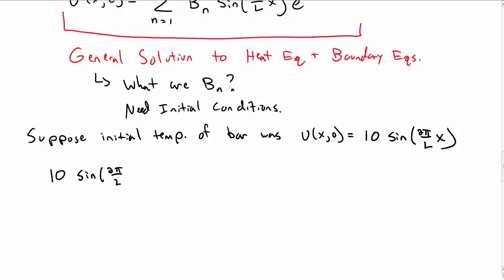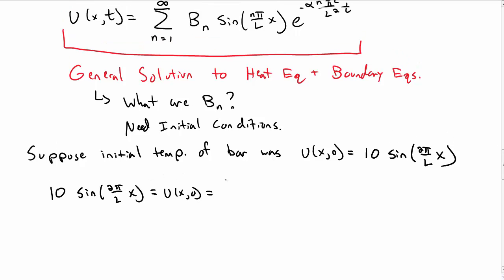Okay, so then that says that 10 sine of 2 pi x over L is equal to, well, u at t equal to 0. And so we put t equal to 0 in our expression that we have here. So sum over B sub n sine of n pi x over L, and then e to the 0, which is just 1.